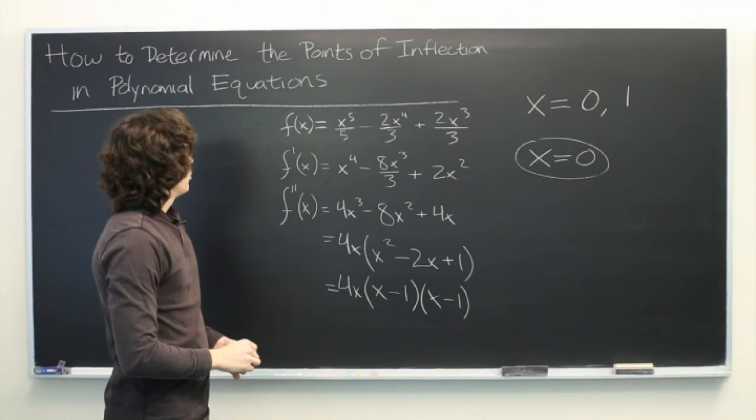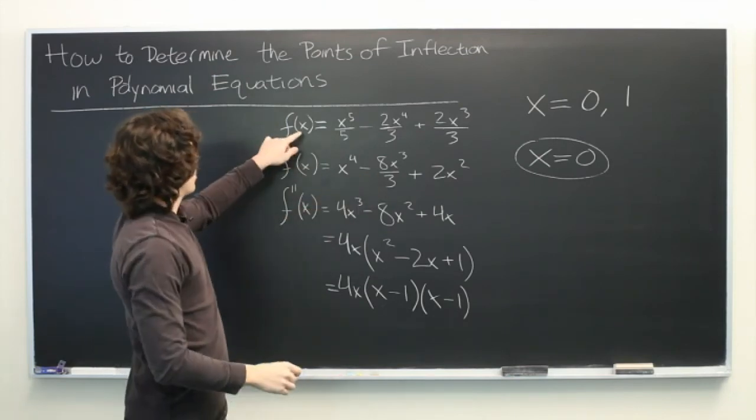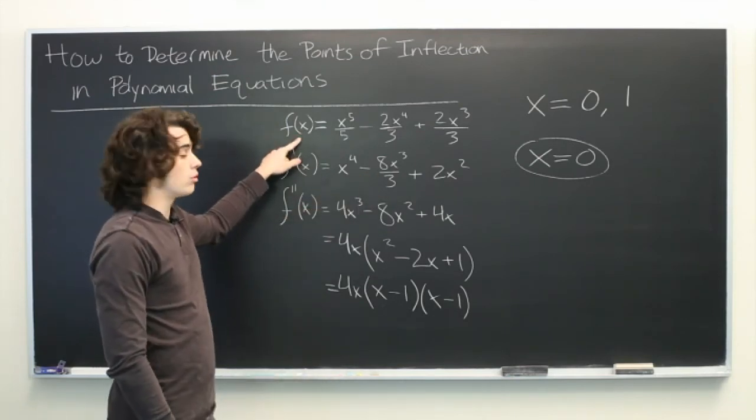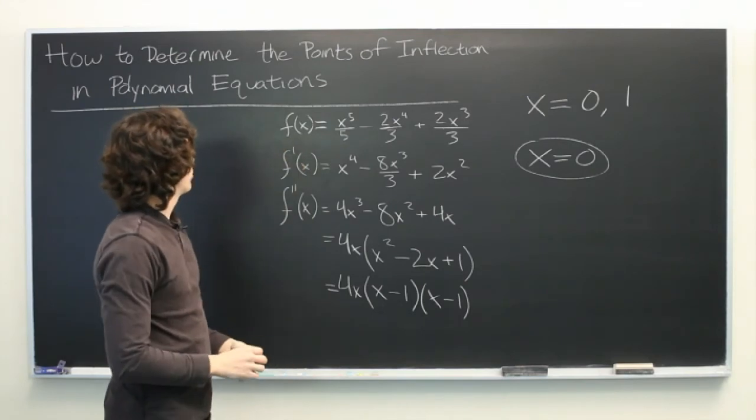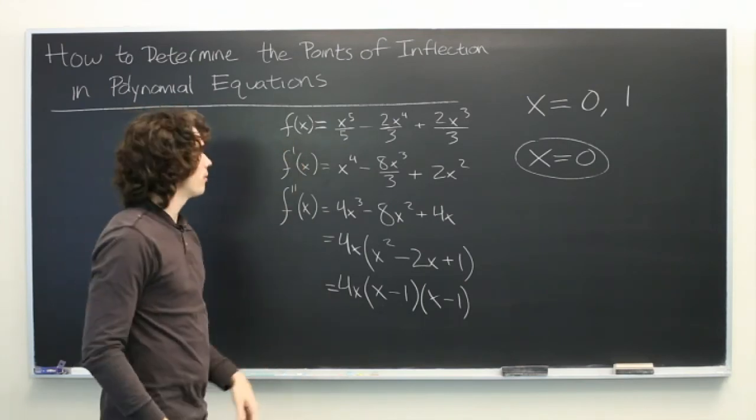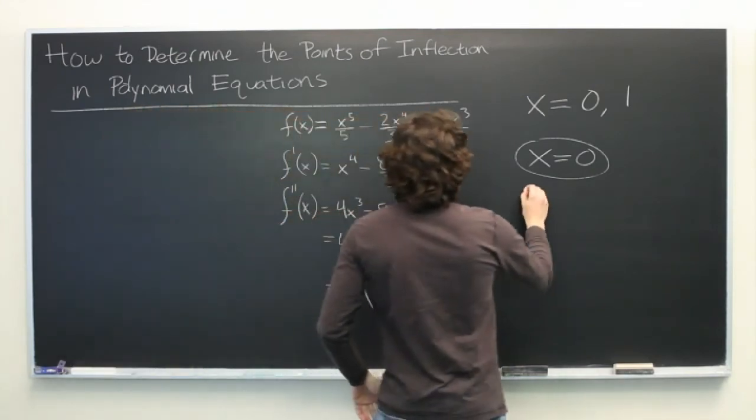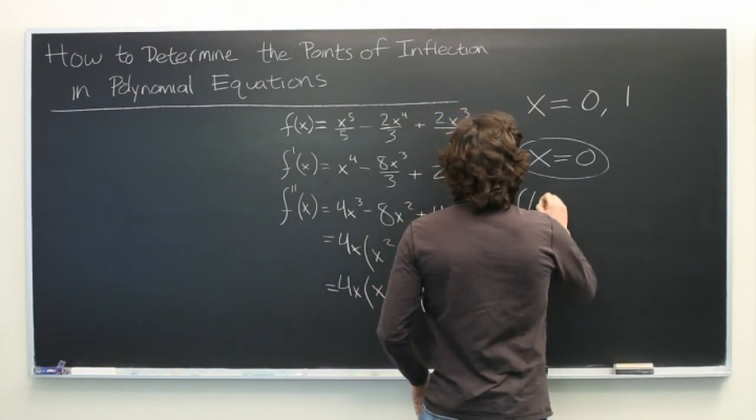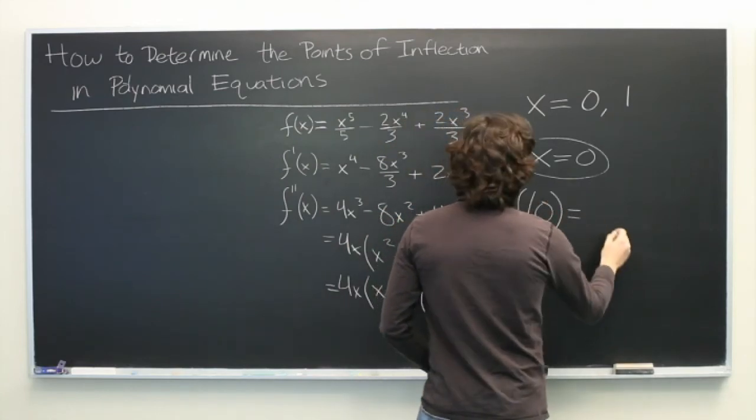If you want to, you can plug in x = 0 into our original equation to determine the point at which we have an inflection point rather than just the value. Of course, we find that f(0), in this case, is just zero.